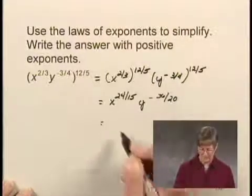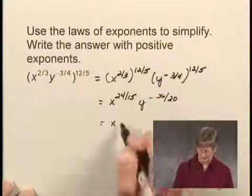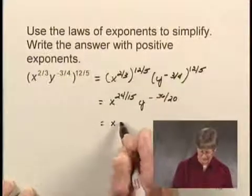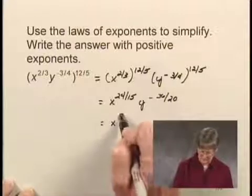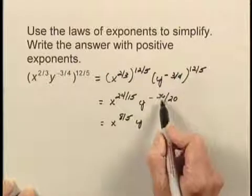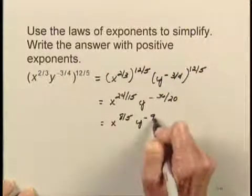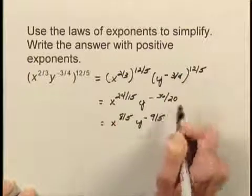Now we can simplify these exponents. There's a factor of 3 in 24 and also in 15, so I can write x to the 24/15 as x to the 8/5 power. And there's a factor of 4 in negative 36 and also in 20, so I can write this as y to the negative 9/5 power.